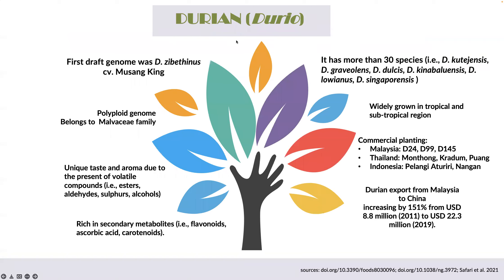Durian is widely grown in tropical and subtropical regions and has more than 30 species, for example Durio cutangenus, Durio graveolens, Durio dulcis, and many more. In Asian countries, durian is commercially cultivated, for example in Malaysia, Thailand, and Indonesia. It also has different cultivars in each country, although they come from the same species.